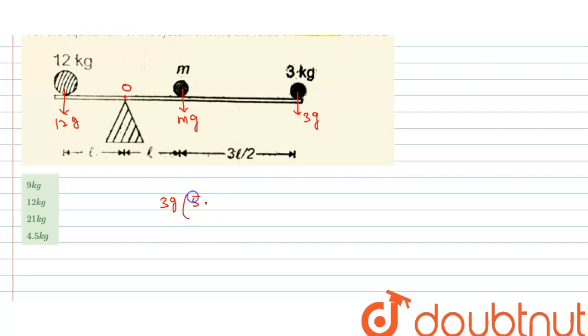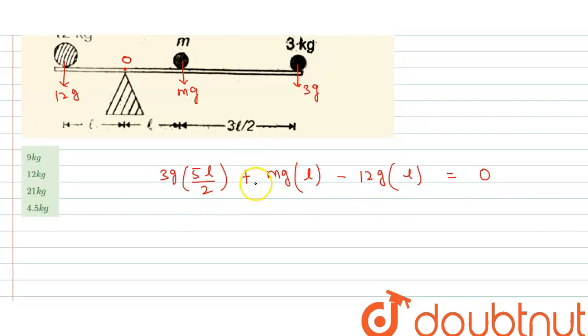Torque is 3g times 5L/2 plus torque due to Mg about O, which is force times perpendicular distance. From O to the line of Mg is L. The torque due to 12g is 12g times L, but in the opposite direction, so minus sign because torque is a vector quantity. This should equal zero.